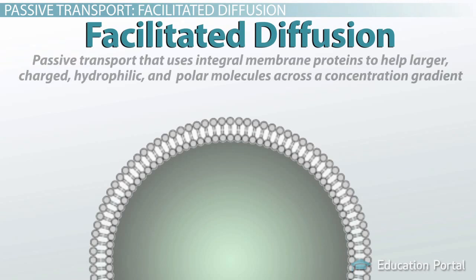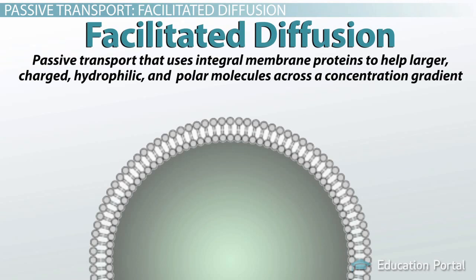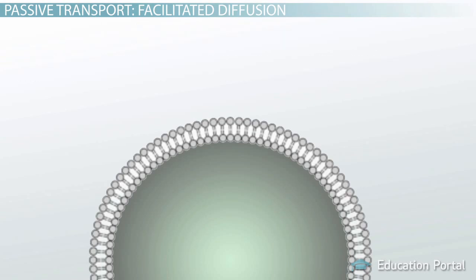So, facilitated diffusion is passive transport that uses integral membrane proteins to help larger, charged, hydrophilic, and polar molecules across a concentration gradient. Remember that integral membrane proteins span the phospholipid bilayer, connecting the inside and the outside.